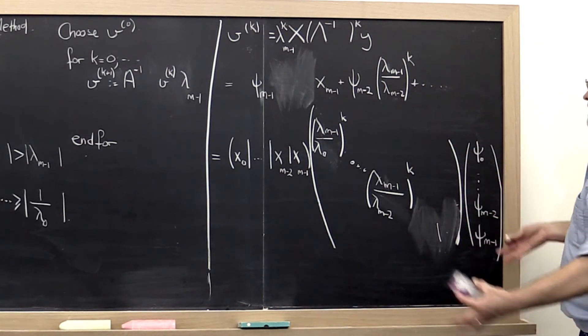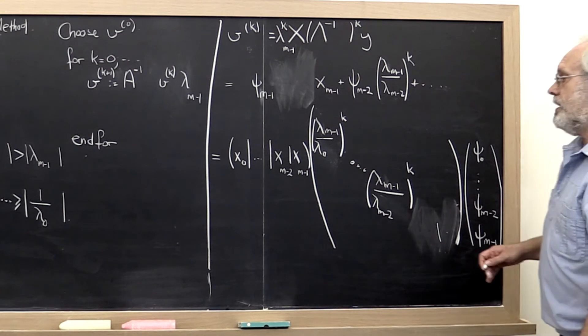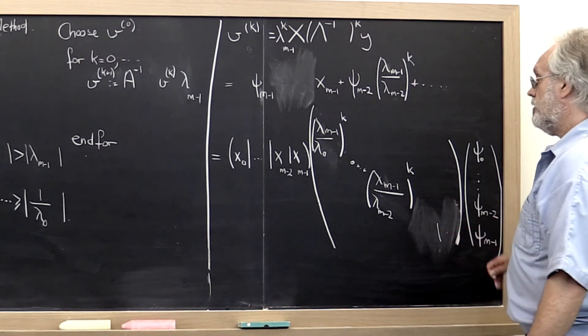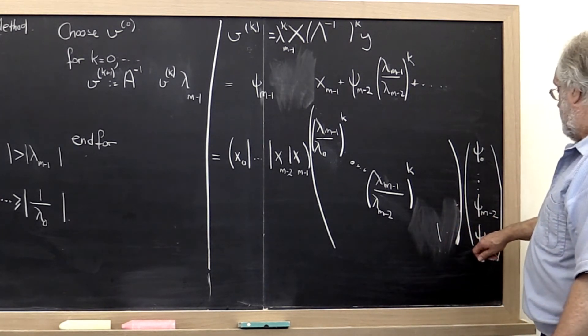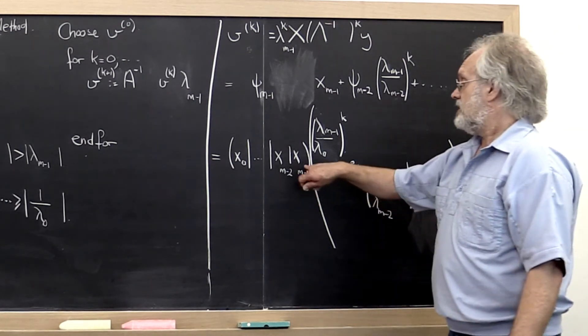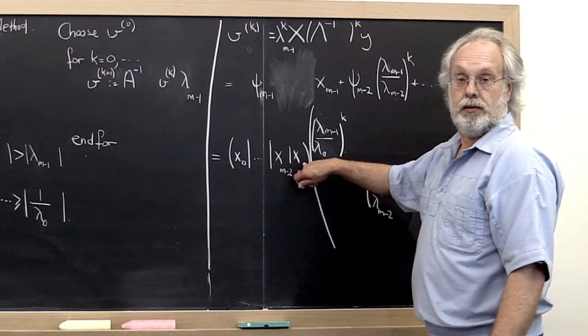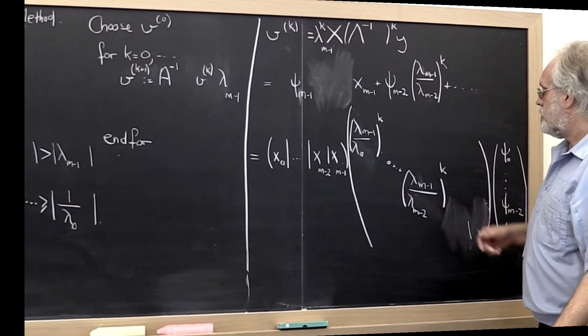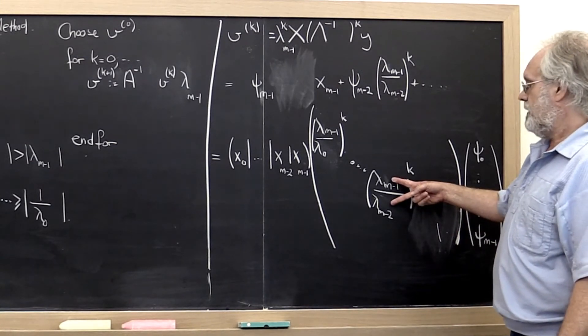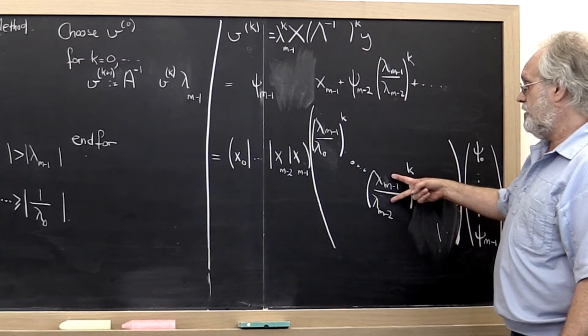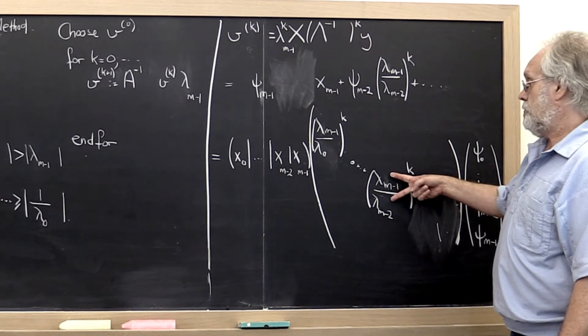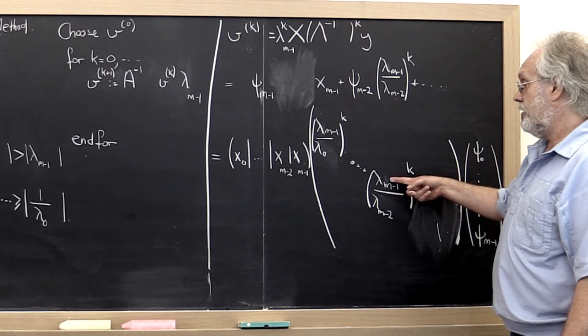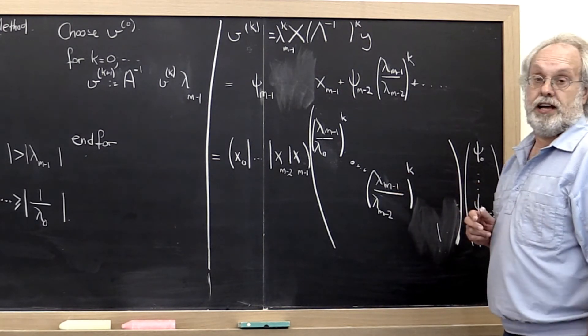And what we notice then is that again we end up converging on the vector psi m minus 1 times x m minus 1. How fast do we get there? Well how fast we get there is now dominated by the ratio of the magnitude of the smallest eigenvalue and the second smallest eigenvalue.